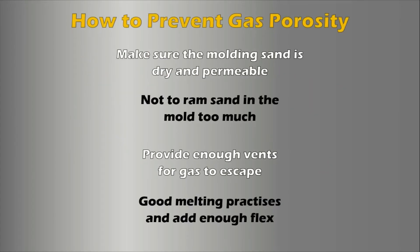To prevent gas porosity, make sure the molding sand is dry and permeable. Coarser sand is more permeable, and using sand that is too fine can prevent optimal permeability. Sand molds that have been rammed too much also lose their permeability, so it's important not to overdo it. Use dry molds and cores, and ensure there is enough venting to allow gases to escape. Use good melting practices by melting the material in a vacuum, around low-solubility gases, or under a flux which prevents air from touching the molten metal.